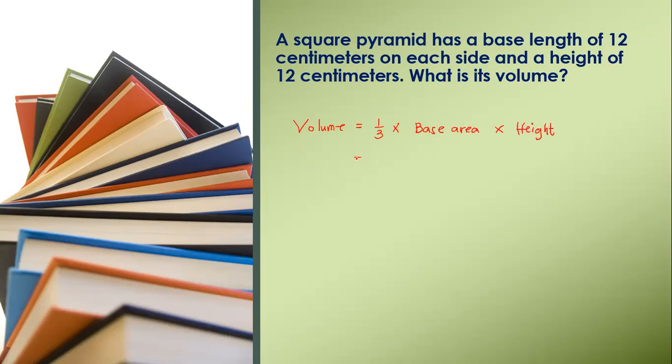Based on the statement given, one-third is constant. The base area is the base length, which is 12, so the base area is 12 times 12. Then the height is 12 cm. So it's one-third times 12 times 12, which equals 144.